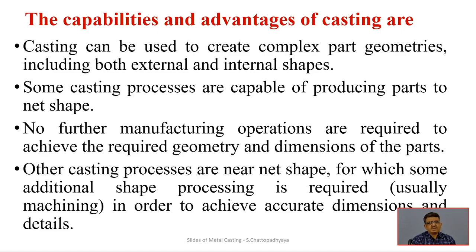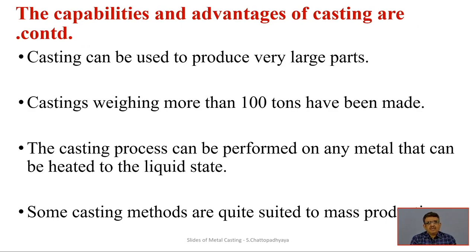Other casting processes are near net shape, requiring some additional processing to achieve accurate dimensions. Casting can also be used to produce very large parts using sand molds, without needing very large machinery. Scalability is favorable — castings weighing more than 100 tons can be made, which is not possible with conventional manufacturing processes like machine tools.